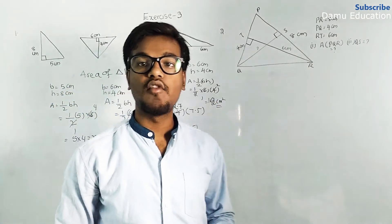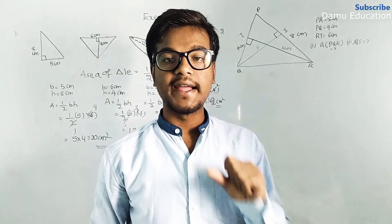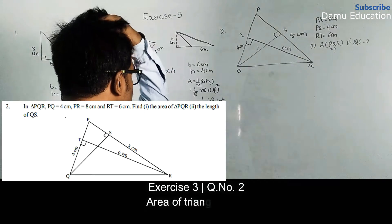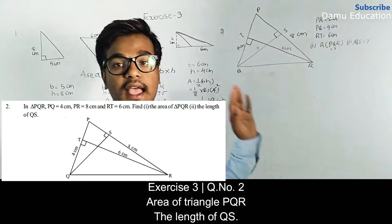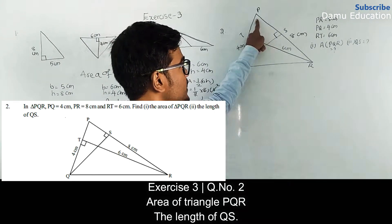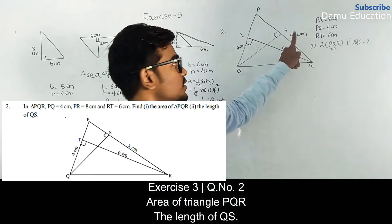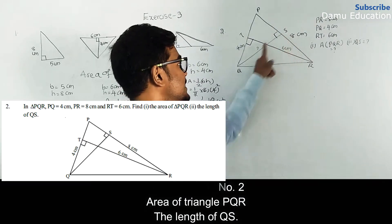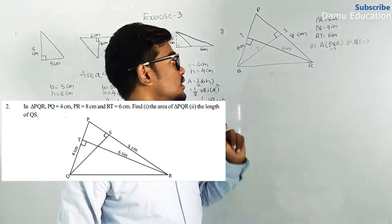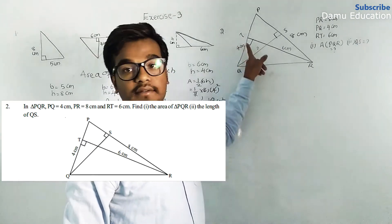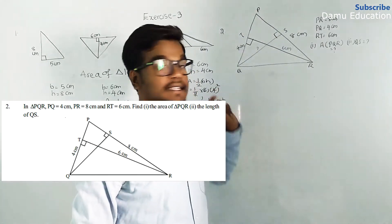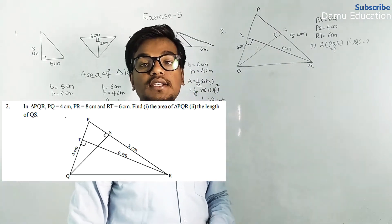We have found the solutions using the formula half into base into height for the area of a triangle. Now for the second question, triangle PQR is given. If we take base as PR that is 8 centimeters, and base PQ is given with perpendicular height TR equal to 6 centimeters.